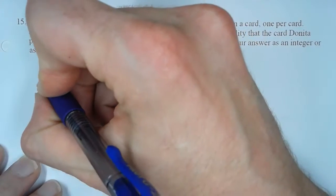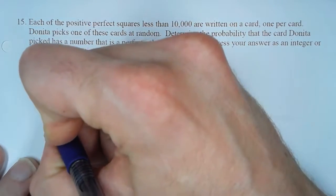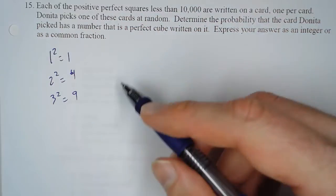Alright, so what are the perfect squares? Well, 1 squared is 1, 2 squared is 4, 3 squared is 9, and we go all the way up to 10,000.